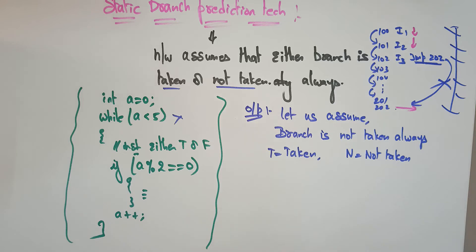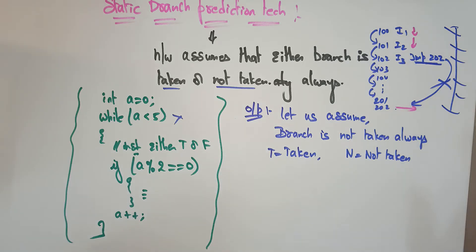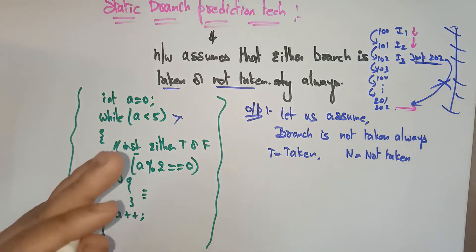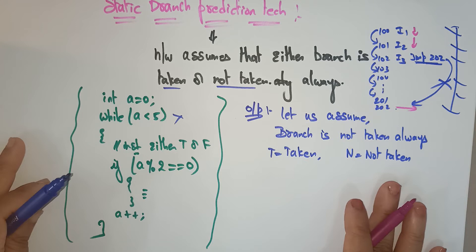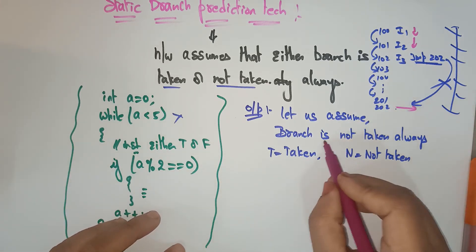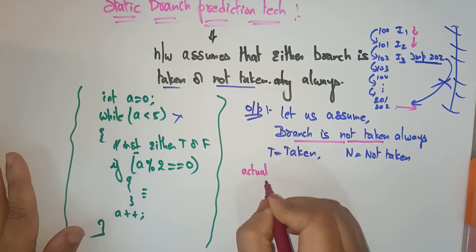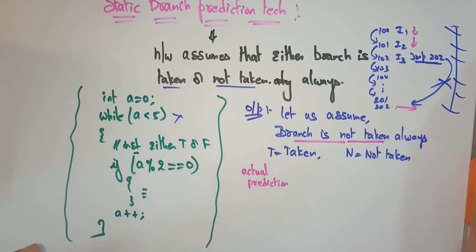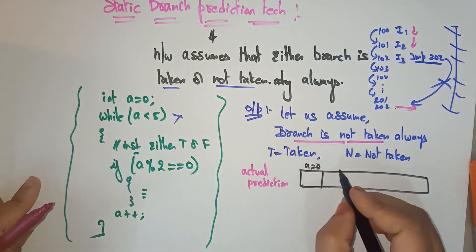So it either assumes not taken for the complete program, or it predicts to take the branch. Static prediction starts with 'take the branch' or 'do not take the branch.' If you get the output, done. If an error occurred, flush everything and next time predict the opposite. That is what static branch prediction is.